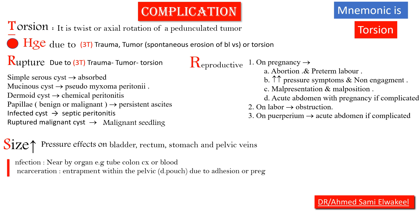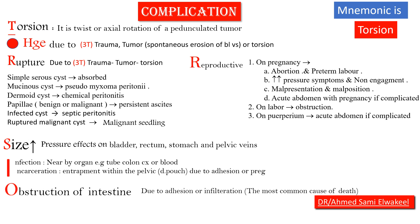I for infection and incarceration. Infection can involve nearby organs such as the tube, colon, cervix, or spread via blood. Incarceration means entrapment within the pelvis, such as in the pouch of Douglas, due to adhesions or pregnancy. O for obstruction of the intestine — reported as the most common complication, occurring due to adhesion or infiltration.